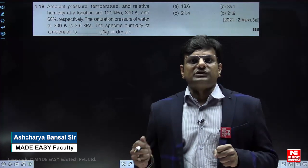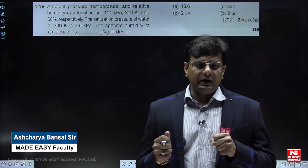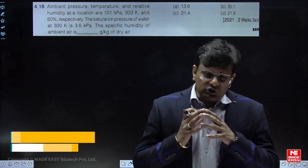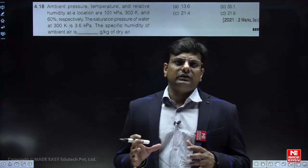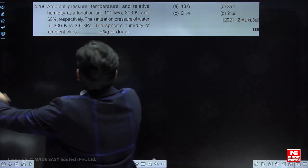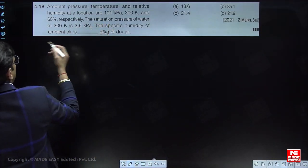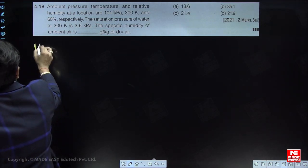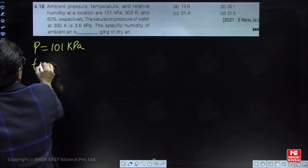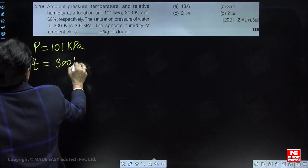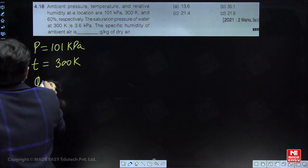What is the question? The ambient pressure, temperature, and relative humidity at a location are given. The total pressure is given as 101 kilopascal and the temperature is given as 300 Kelvin (the dry bulb temperature). Relative humidity is given as 60 percent.